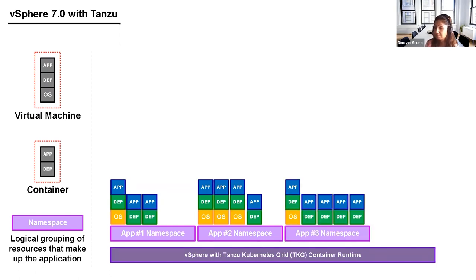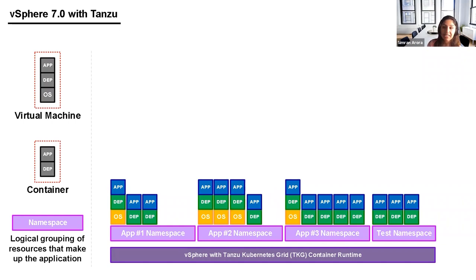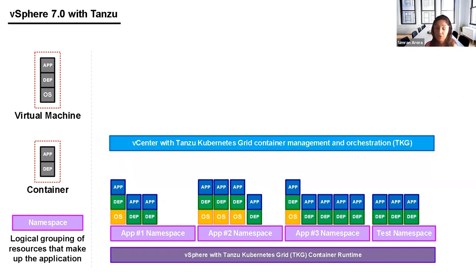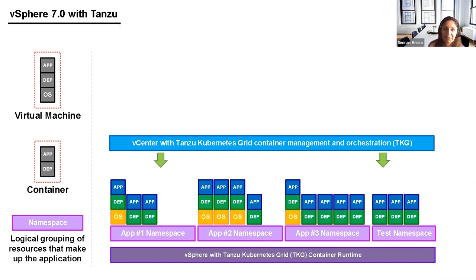You could have one namespace with one VM and two containers, another with three VMs and one container, another with three containers and one VM, and another with just containers for development and testing. This gives you one unified environment regardless of whether you're running in VMs or containers. With vCenter and Kubernetes you get vCenter with Tanzu Kubernetes Grid — also known as TKG — to manage both your VMs and containers together.